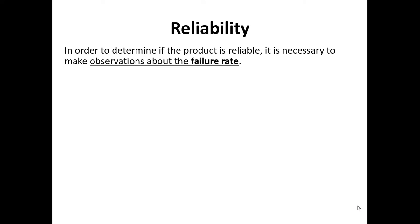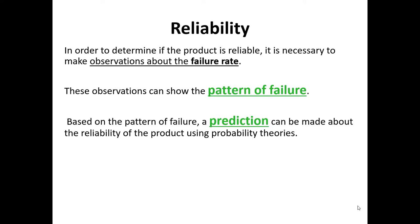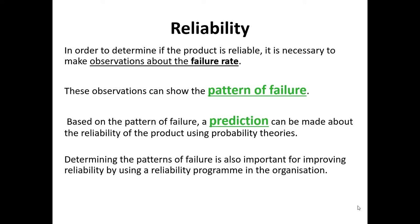In order to determine if a product is reliable, it is necessary to make observations about the failure rate. Basically, you're doing experiments — that car would have been tested under different conditions to make observations about its failure rate. These tests form a pattern called the pattern of failure. Based on the pattern of failure, a prediction can be made about the reliability of the product using probability theories. Probability theories are used in reliability engineering to predict the chances of failure of a product, and determining patterns of failure is important for improving reliability using a reliability program in the organization.